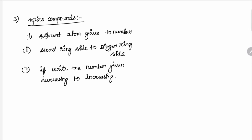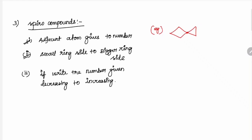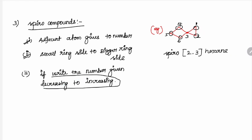For example: a 4-member ring and a 3-member ring. This is a spiro compound. First point: the adjacent (spiro) atom is given the number last. Second rule: smaller ring side is numbered first, then the bigger ring side. Here: 1, 2, 3, 4, 5, 6 — this is Spiro[2.3]. Six carbons available: Hexane. Third point: the bracket notation decreases to increases — opposite to fused and bridged.